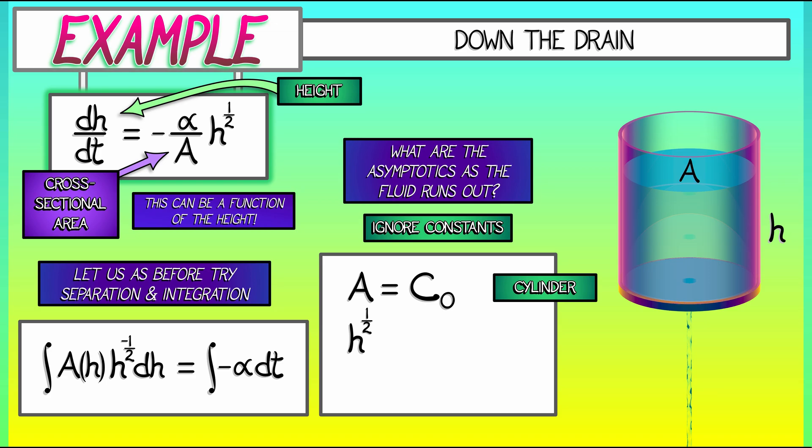On the right-hand side, when I integrate negative alpha dt, I get some constant times t plus another constant. Let's bundle all that up and say that the right-hand side integrates to c_1 minus c_2 times t, since that height is going to zero and time is going forward. Now solving for h, and again ignoring constants, we get h equals quantity (c_1 minus c_2*t) squared.